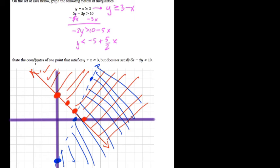And what they ask us next is state the coordinates of one point that satisfies the first inequality but does not satisfy the second. All that means is pick a point that satisfies the first, and the first is this red, right, y is greater than. So a point that's in the red region but not in the blue region. That's all they're asking us.